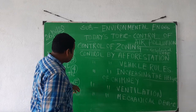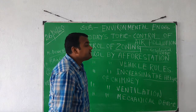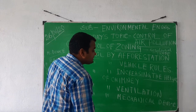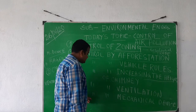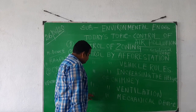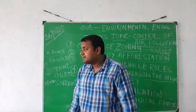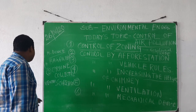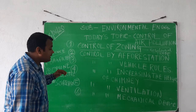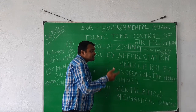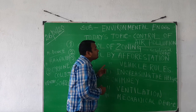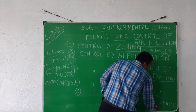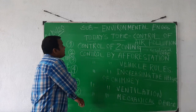The next point is control by ventilation. Ventilation systems are provided in our households, and different types of chimney and ventilation systems are provided as a result to control air pollution. Next, a very important method is control by mechanical devices. Different types of mechanical devices include bag filters, cyclone scrubbers, cyclone collectors, and venturi scrubbers. These mechanical devices are provided mainly in industrial zones. As a result, air pollution is strictly controlled.